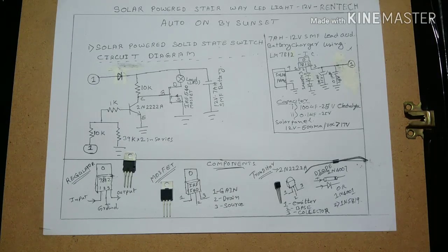Hello friends, welcome to another episode of RENTEC. Today we will design a solar powered stairway LED light that gets auto on by sunset. For this we will have two parts of design: one would be a design for a battery charger.